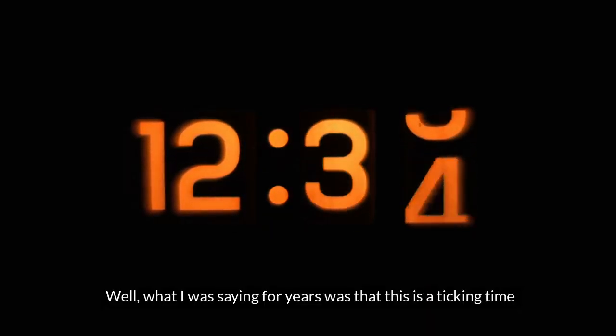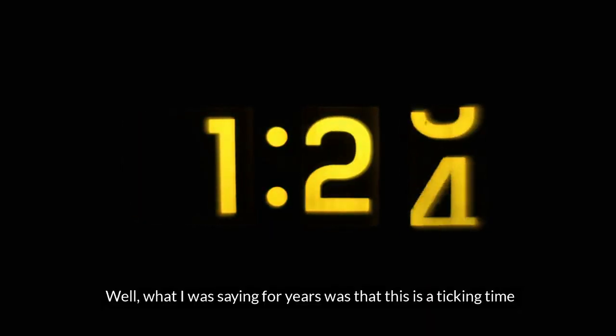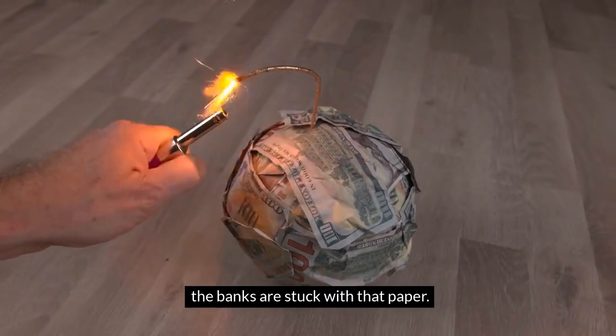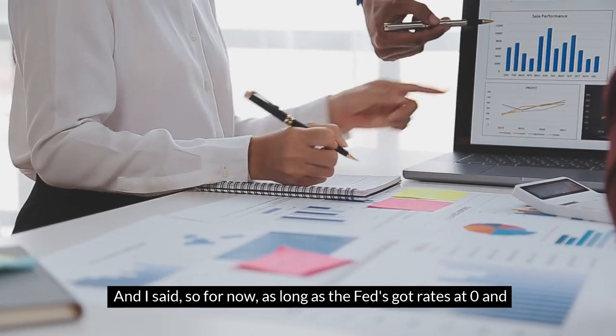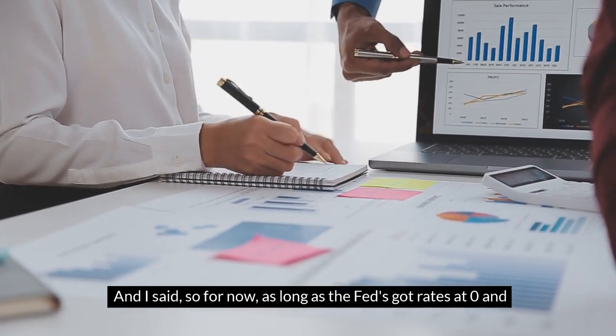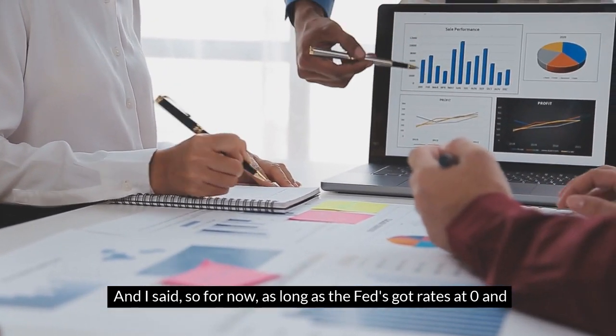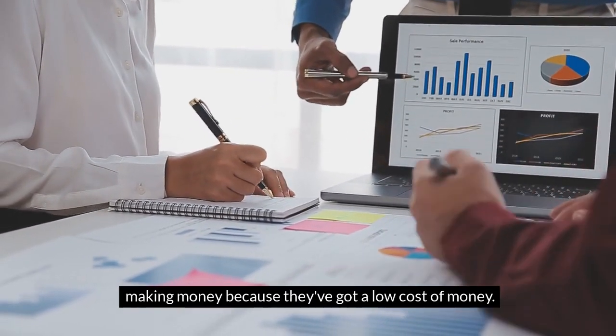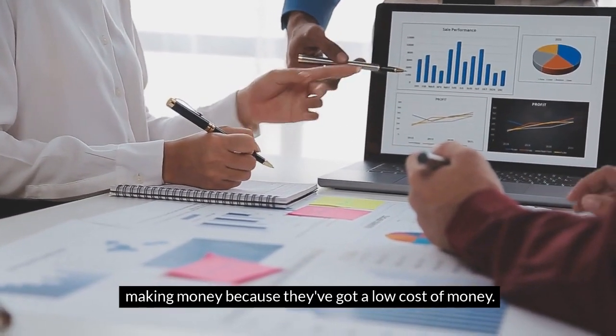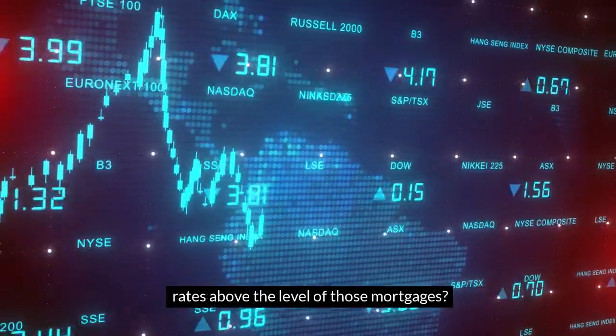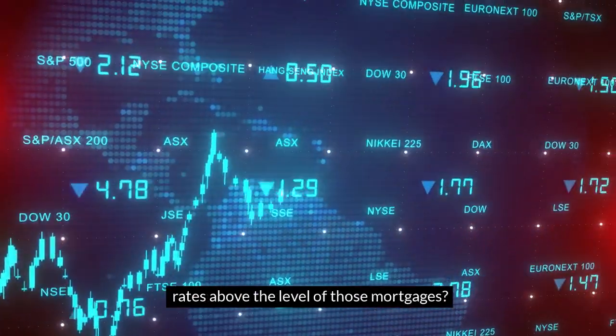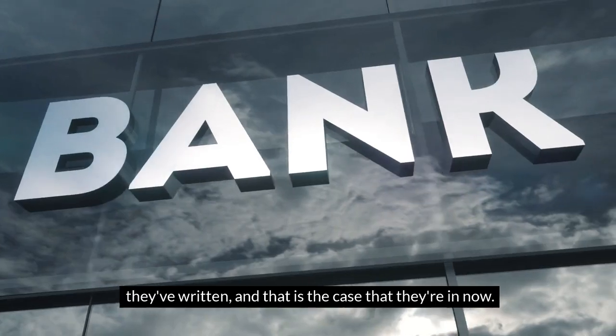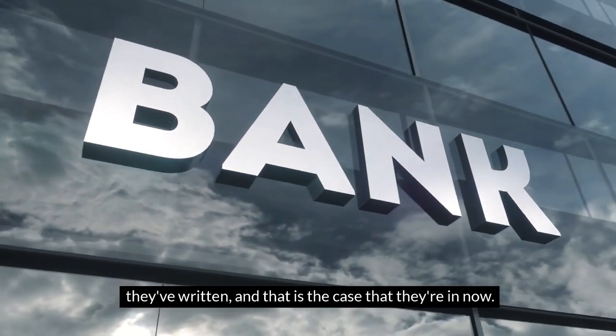What I was saying for years was that this is a ticking time bomb for the banking system, because the banks are stuck with that paper. For now, as long as the Fed's got rates at zero and these banks have mortgages that are three, four percent, they're making money because they've got a low cost of money. But I said, what happens when the Fed has to raise interest rates above the level of those mortgages? That means the banks are losing money on every mortgage that they've written, and that is the case that they're in now.